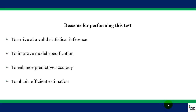The last reason on my list is to obtain efficient estimation. Take note: when there is a problem of serial correlation, the estimates may be unbiased, but the estimates will no longer be efficient. So when you detect serial correlation and you correct for this problem, then you are certain of having an efficient estimate. There are also some other reasons which you can find online.